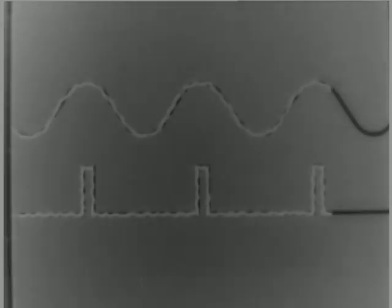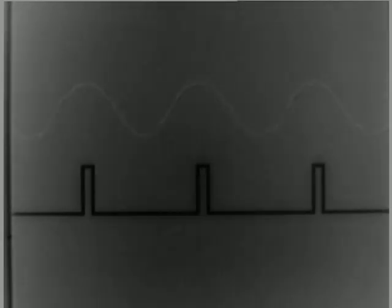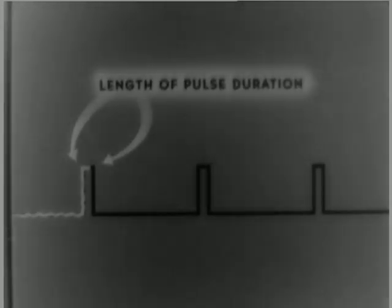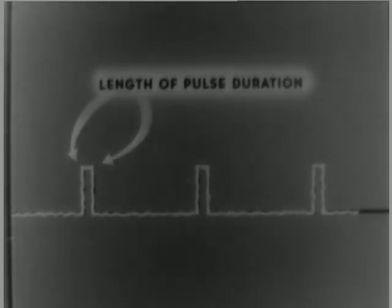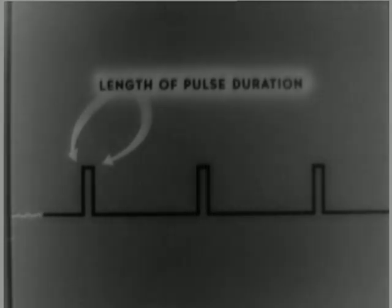When we use the rectangular trigger pulse, the voltage rises from zero to its peak value instantly, remains at that point for the length of the pulse duration, then immediately returns to zero. Pulse duration is also called pulse width.